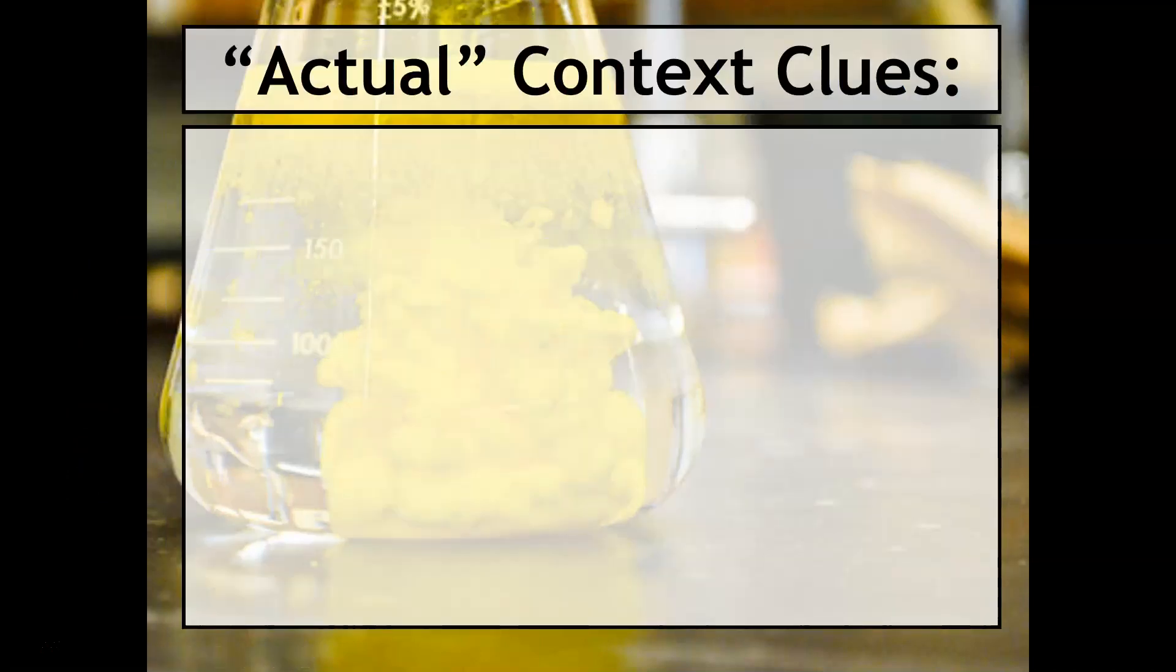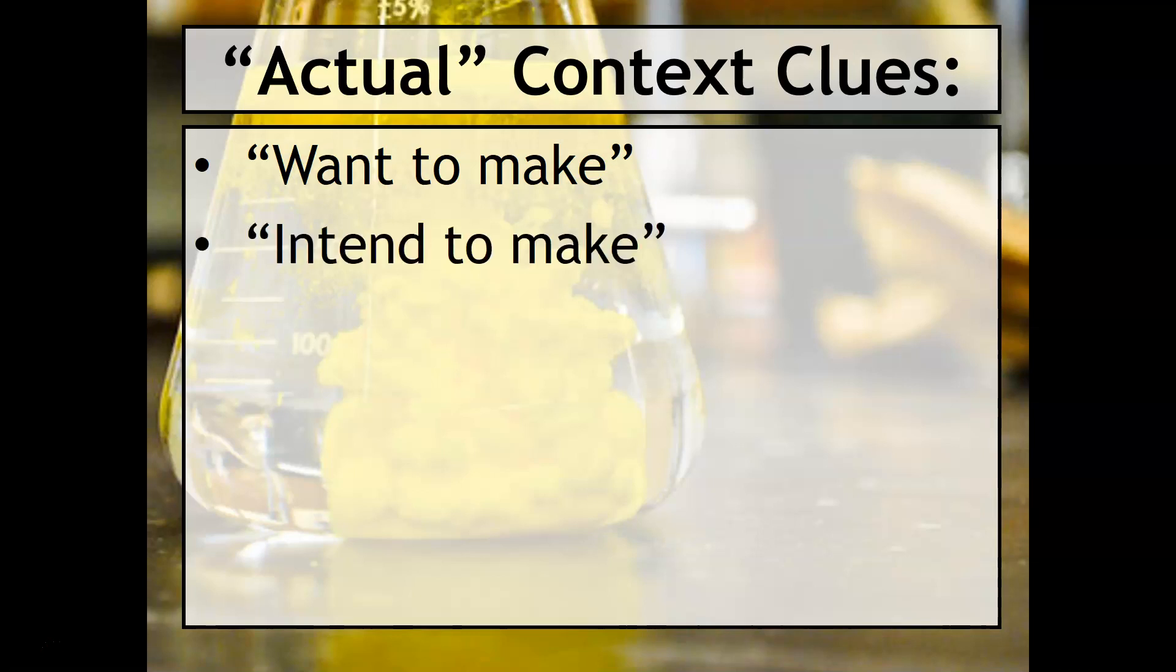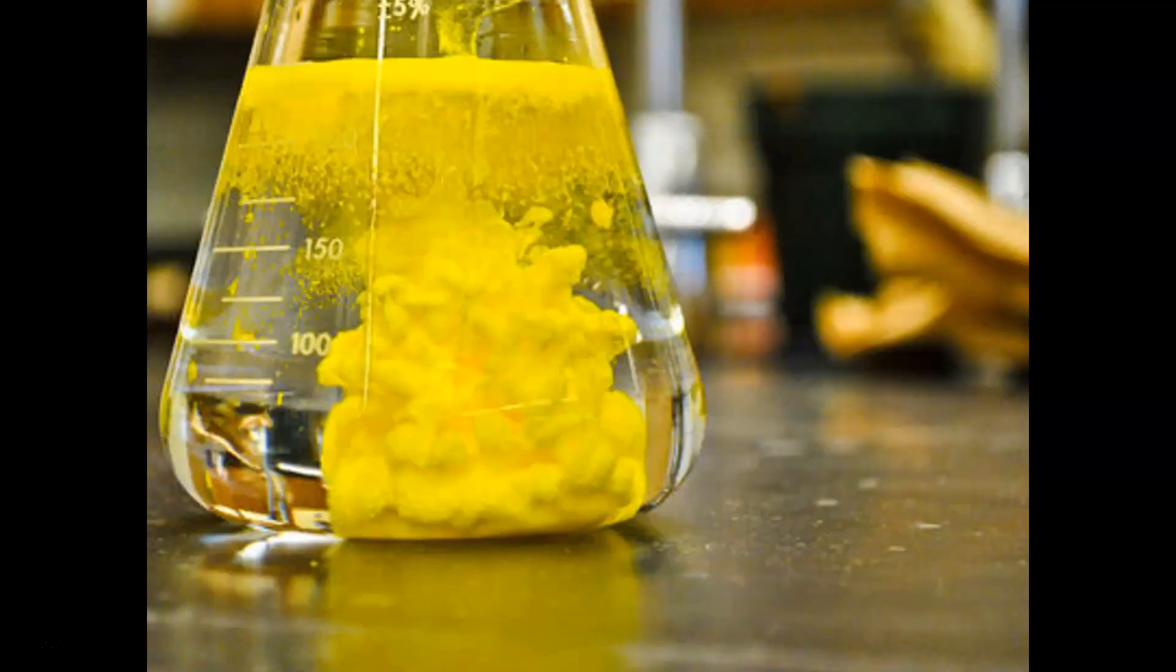Students sometimes have difficulty figuring out what refers to the actual, because percent yield is actual over theoretical. Here are some context clues that might help you: if you see the words 'want to make,' 'intend to make,' 'is produced,' or 'is formed,' those are all clues that mean it's actual.